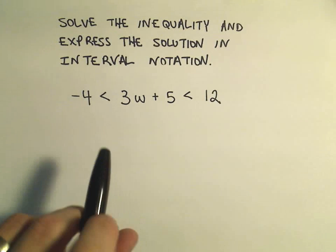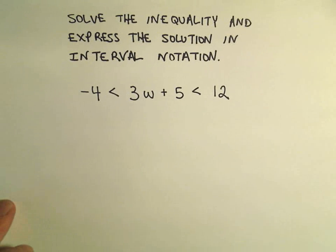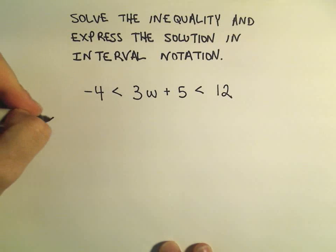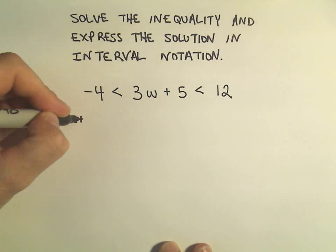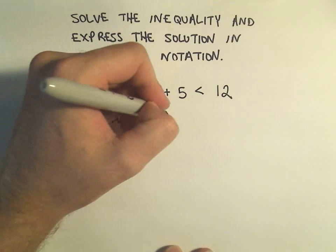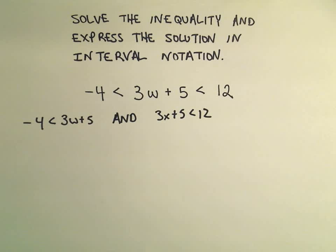So here it says -4 has to be less than 3w + 5 which has to be less than 12. When we write this in one fell swoop, really what they mean is -4 has to be less than 3w + 5 and also 3w + 5 has to be less than 12. So it's really just a shorthand way of writing both of these statements at once.